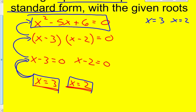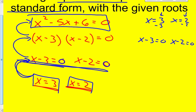Now how do we go from the roots to the factors? We need to get a 0 on the right side. So you would subtract 3 and subtract 2. So x minus 3 equals 0 and x minus 2 equals 0. Now let's go backwards another step. We just put those factors and multiplied them by each other to get 0. So x minus 3 is going to be multiplied by x minus 2 and set that equal to 0.